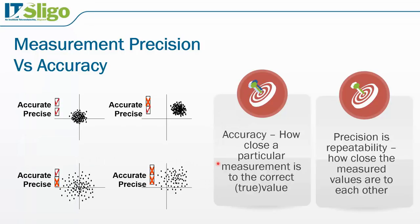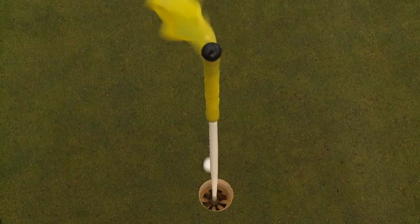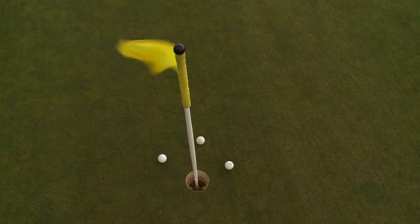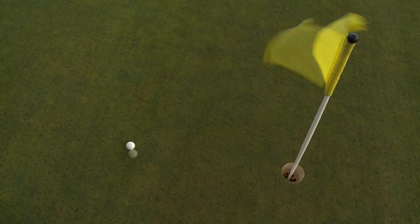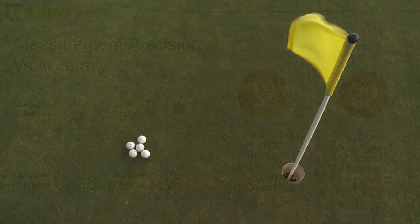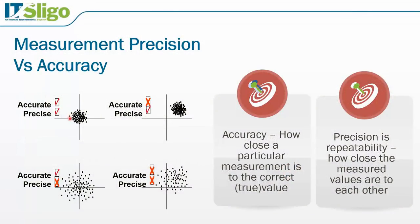Accuracy is how close a particular measurement is to the correct true value. Using the dartboard analogy — or the golf analogy, trying to get the ball into the hole — how accurate we are depends on how well we play. We could be centered around the target, which would be considered pretty accurate. But we could also be precise. Precision is repeatability: how close the measured values are to each other. By definition, we usually need more than one value. We could be precise but not accurate. On the left of the slide, centered around the target, we're both accurate and precise. We could be accurate but not precise. We could be precise but not accurate — for example, your watch is exactly five minutes fast. Or we could be neither accurate nor precise.